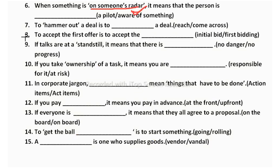To hammer out a deal is to blank a deal — reach a deal or come across? Come across means just to glance at something in passing. Reach means to get success. So to hammer out means to reach — meaning complete success. The correct answer is reach a deal.